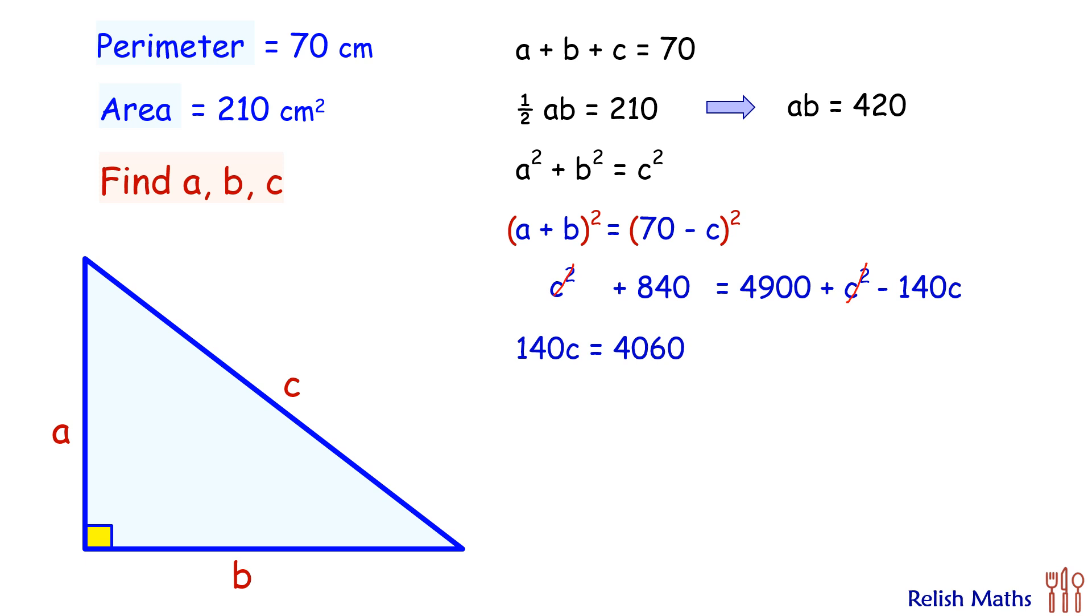We'll get 140c equals 4060. Solving it, we'll get the value of c as 29 centimeters.